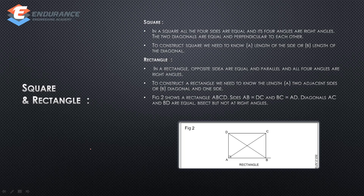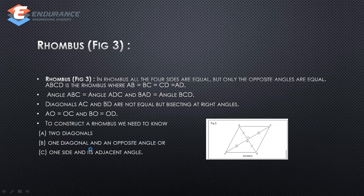For a rectangle, the opposite sides are equal and parallel, and all four angles are right angles. To construct a rectangle, you need two adjacent sides as length and width, or the diagonal and one side length. For a rhombus, all four sides are equal and only the opposite angles are equal. To construct a rhombus, you need one diagonal and one side, or two diagonals.